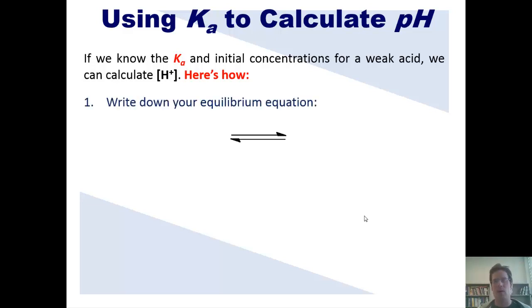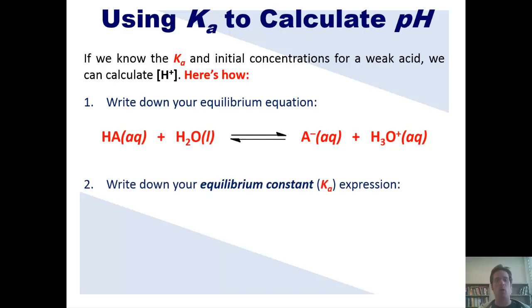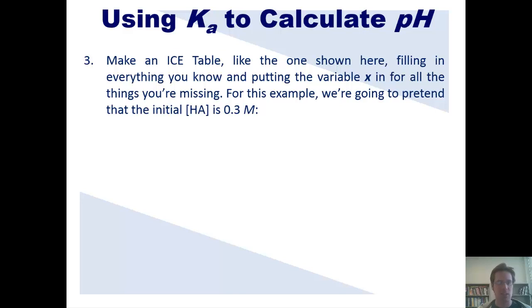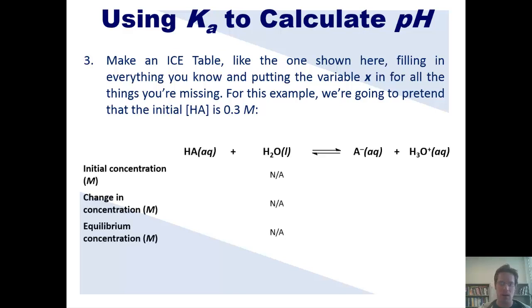First, we write down our equilibrium equation, which generically should look like this. Second, we have to write down our equilibrium constant or Ka expression, which should look like this. Third, we make an ice table, like the one shown here, where we fill in everything that we know, and then we put a variable X in for everything that we don't know.